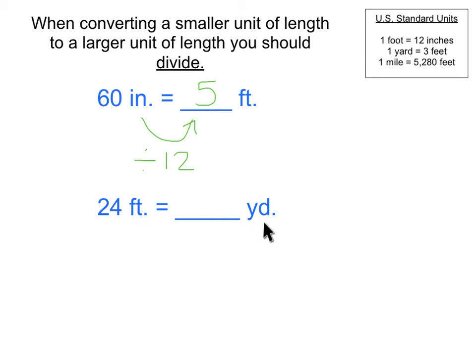24 feet equals some number of yards. Well, feet is a smaller unit of length compared to yards, and I know that a yard is made up of 3 feet. So I'm going to need to divide by 3 to get how many yards is in 24 feet. 24 divided by 3 is 8. So that comes to a total of 8 yards.